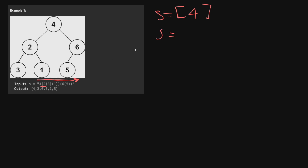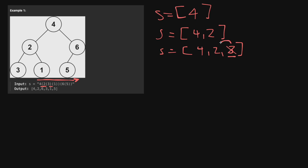Now the next element we see is a parenthesis, which means we now need to do the left subtree of whatever the previous element was — basically the left subtree of our 4. The next element we see is a 2, and we put that into our stack. Now we see another parenthesis, which means we are working in the left subtree of the node we just saw — that's 2. The next value we see is a 3, so we're going to have 4, 2, and 3 in our stack. Now we see a right parenthesis, which means you are closing one set. This right parenthesis closes the one we opened when working with 3. So now we know that 3 no longer has any children — we can pop it from the stack and assign it as a child of the parent node.